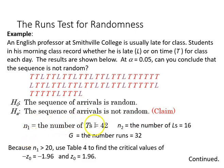The n1, the number of on times, is going to be 42. The n2, the number of being late is 16. G, the number of runs is 32. Based on our n1 sample being greater than 20, we use table 4 to find the critical values of z, our z-table. On the negative side of that, it's negative 1.96, and on the positive side, it's 1.96.